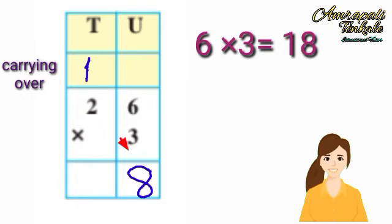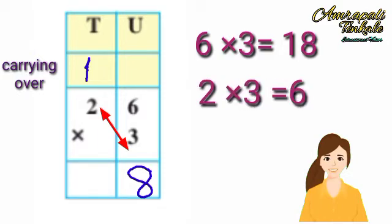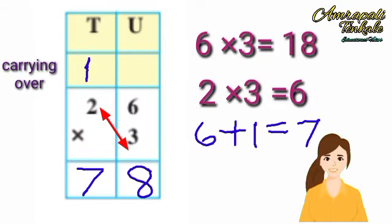Multiply the 2 in the 10th place by 3. 2 threes are 6. And with the new 1 ten, we get 7 tens. These we write in the 10th place in the answer. The product is 78.